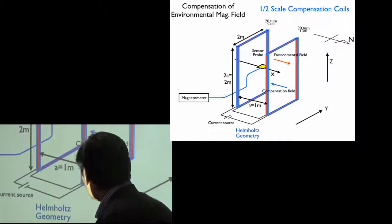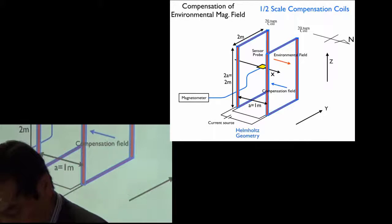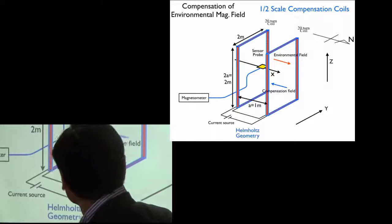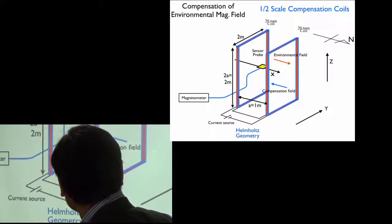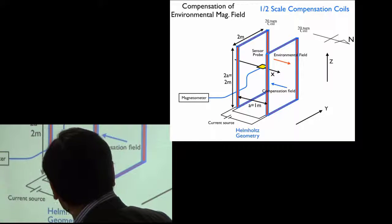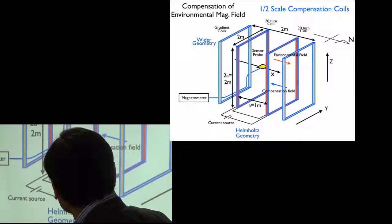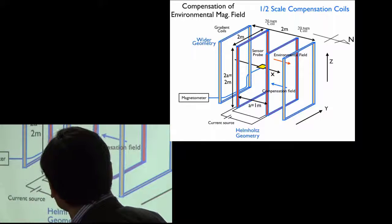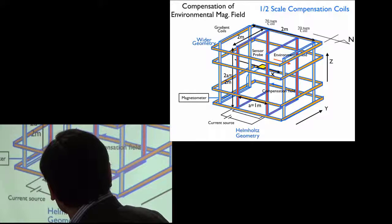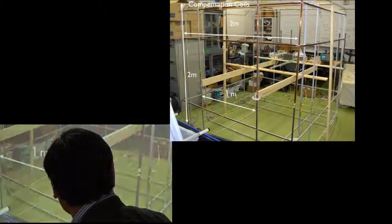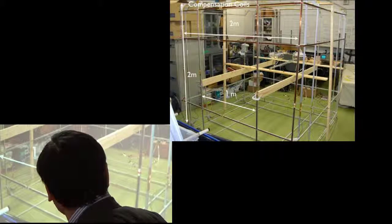The one set of the Helmholtz geometry coil will compensate the magnetic field from the outside. And also using the wiser geometry of coils, we will compensate also the field gradient. And z direction and also y direction.